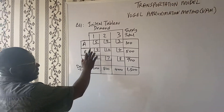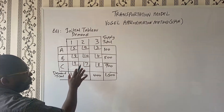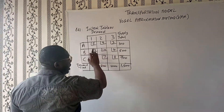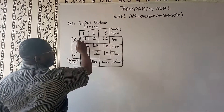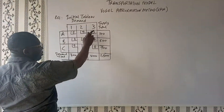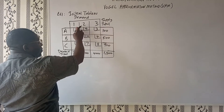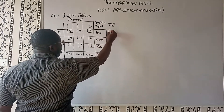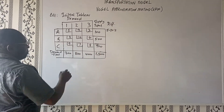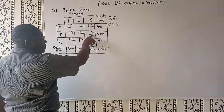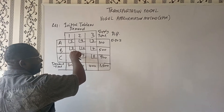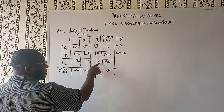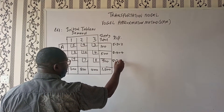From these costs we have, we are going to find the least costs for the rows and for the columns. The least cost for the first row is three, and the next one is five. So find the difference — five minus three gives us two. For the next row, the least cost is four, and the next least cost is eight. Then the least cost is seven and the next is eight, so eight minus seven gives us one.